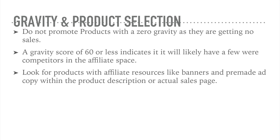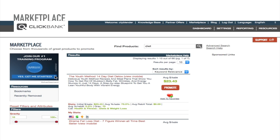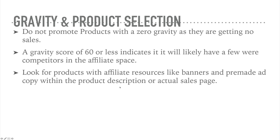That would be described in the product description — it might say something like 'for affiliate banners go to this URL,' and it will point you to a URL that has sales copy, banners, and graphics that you can use to sell the products, so you don't have to create them yourself.